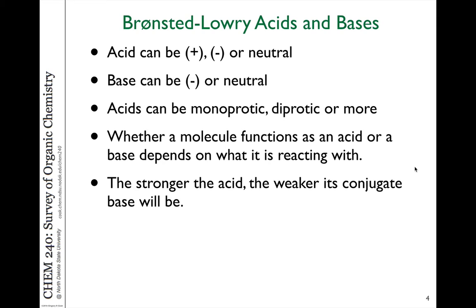When we talk about Bronsted-Lowry acids and bases, we have acids and bases of all different strengths, and they can be positively charged, negatively charged, or neutral. A base that can accept a proton is generally negatively charged or a neutral species — for example, OH⁻ or water. We can also have acids with more than one acidic proton, and each deprotonation could have different acid strengths.